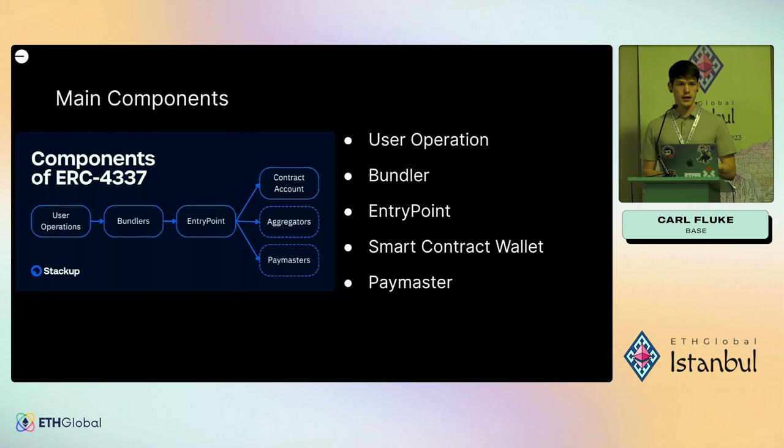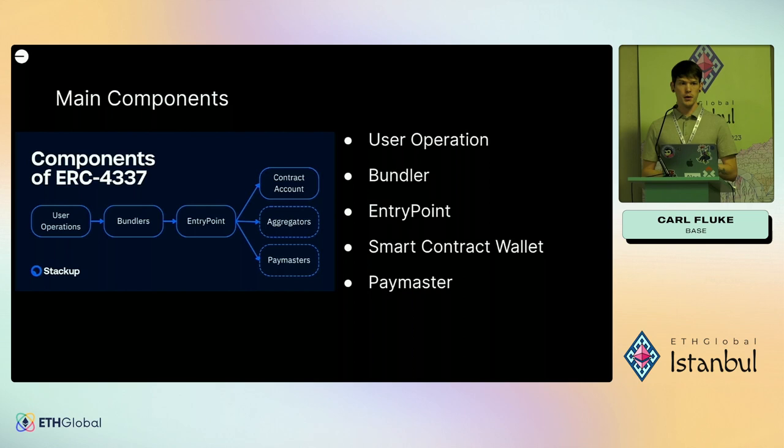Next you have a bundler. There are a bunch of these out there — Stack Up has one, Alchemy has Rundler — there are like five or six of them. For my code example I used Alchemy's. There are other providers in the Base ecosystem. Next you have the entry point — that's probably the thing you'll interact with the least unless you're making your own smart contract wallet, so we can skip right past that.